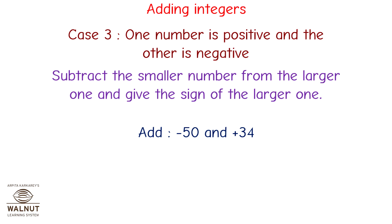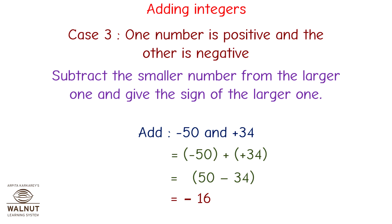Add minus 50 and plus 34. We write the statement: minus 50 plus plus 34. Since one number is negative and one is positive, we subtract the smaller from the larger and give the sign of the larger. The larger number is 50, so the sign will be negative. We get 16 with a negative sign, so minus 16 is the answer.